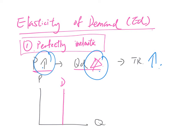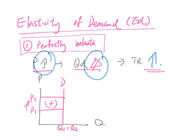In the perfectly inelastic diagram, when the price changes from P1 to P2, Q1 and Q2 are equal — quantity does not change. There is an extra area gained from the price increase, with no loss area. So total revenue increases, because there is only a plus area.